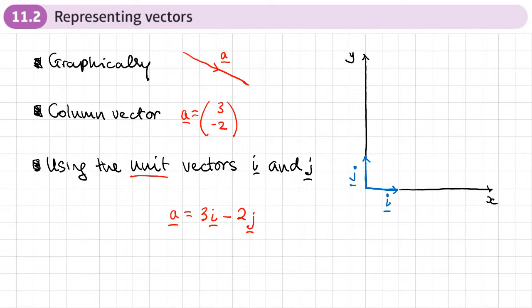Now, this makes it very easy to add vectors together in this form, also in column vector form, because all we need to do is add all the I parts together and add the J parts together when we're adding vectors. And if it's in column vector form, we just add the top row of numbers together and the bottom row of numbers together to get what we call the resultant vector.